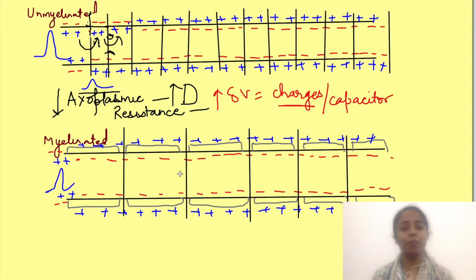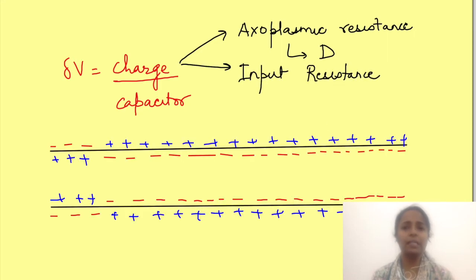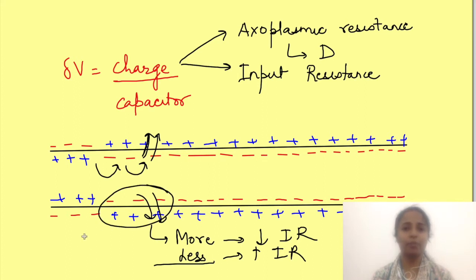But apart from this there is one more factor which affects how much charge is there at the new site. It's input resistance of the membrane. See membrane has leaky channels and some amount of charge which reaches to the next region leaks out preventing the build up of the potential. If more charge leaks out the membrane is said to have lower input resistance. Lesser leaking means high input resistance. So if leak is less that is high input resistance more charge will be there at the new site causing more change in potential magnitude.